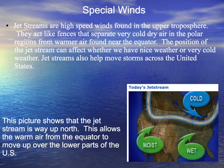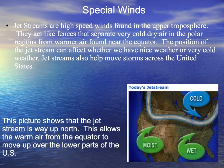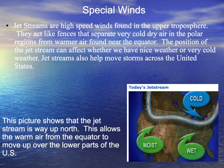In this picture, the jet stream is way up north near the northern part of the United States. This allows the warm, moist air coming up from the Gulf Coast area to move upward, because the jet stream fence is up here. The jet stream is very important. In the winter time, it's what causes us to have really cold weather or mild weather. In the summer time, it can affect whether it's hot and dry or warm and moist with lots of rain.